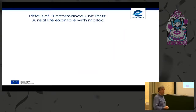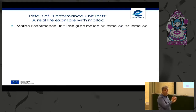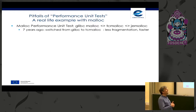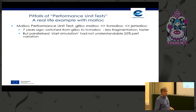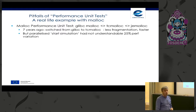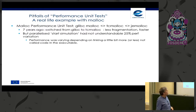There are pitfalls with performance unit tests. A real-life example with malloc: we developed a performance unit test to compare glibc malloc with TC malloc and JE malloc. Seven years ago we switched from glibc malloc to TC malloc because we had less fragmentation and it was faster. When we parallelized the start simulation — recreating 20 million in-memory indexes — we saw unexplained 25% variation: sometimes start simulation took four seconds and sometimes five seconds.